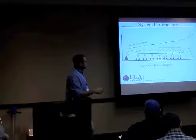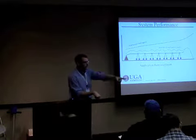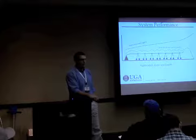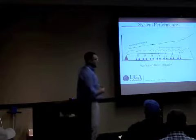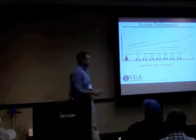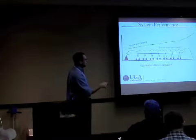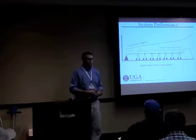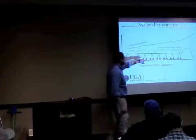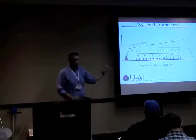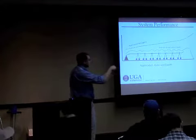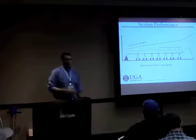What you want to keep in mind is that your application rate along the length of a pivot should go up. Why? It's moving faster out there and covering a lot more acres. So we've got to have a higher application rate out there, and that's set by the nozzle orifices. We're looking for uniform application depth, not a uniform application rate. Our application rate should increase as we go towards the end of that pivot.